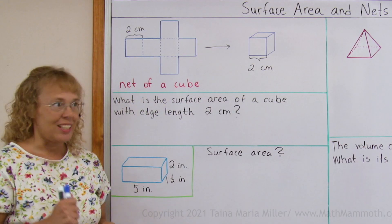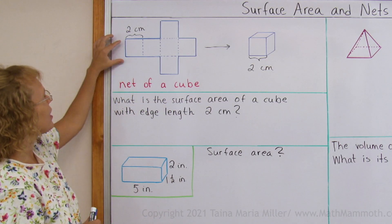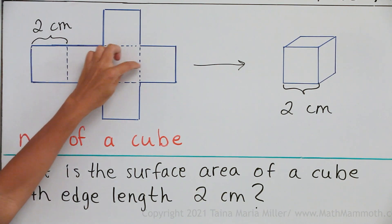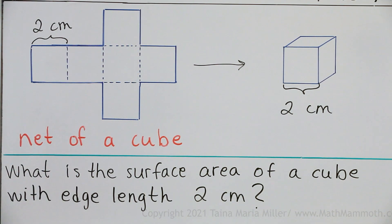And we can use the net now. If you look at the net here, I have squares. I have 1, 2, 3, 4, 5, 6 identical squares, and those are the faces of the cube.